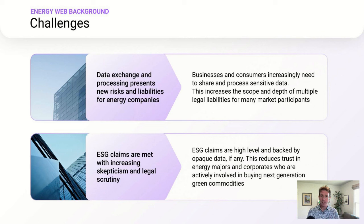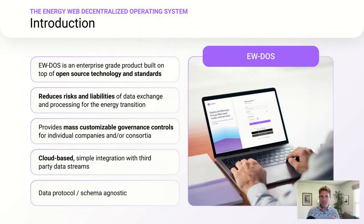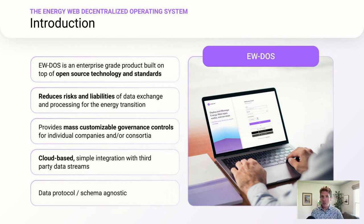In response to those two challenges, we built a product with our ecosystem called the EnergyWeb Decentralized Operating System. This is the primary technology platform used to configure and support different solutions in the EnergyWeb ecosystem. It's best thought of as an amalgamation and combination of different open source technologies and standards. This whole platform is designed to attack both of those challenges — it's configured to dramatically reduce the risks and liabilities of energy companies exchanging and processing data, and it enables corporates and companies to customize governance for different pieces of enterprise software that involve many different companies, supporting a variety of consortia-focused use cases.